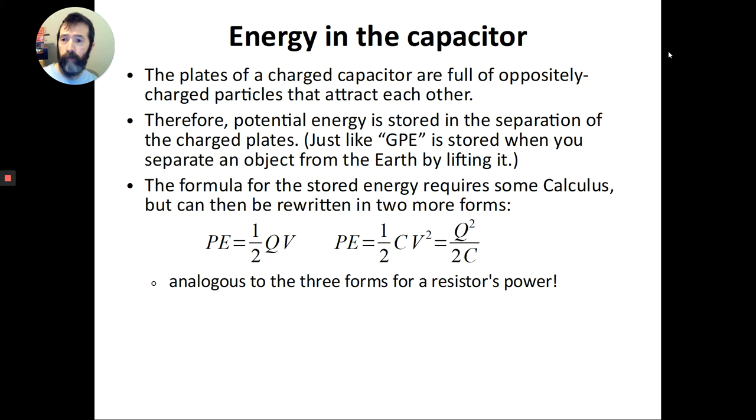So if you charge up the capacitor by connecting it to a battery, you've got those charged plates. And oppositely charged objects attract each other. So I have this positive and this negative right here close to each other. There's going to be a force trying to pull them together. And if I hold them apart, or if I like to pull them further apart, that's going to require work. It means that there's energy stored there. There's a potential energy, just like if you hold an object up above the ground. You have gravitational potential energy in that case because the object is attracted to the earth. And here with the capacitor plates, there's potential energy stored there, too.